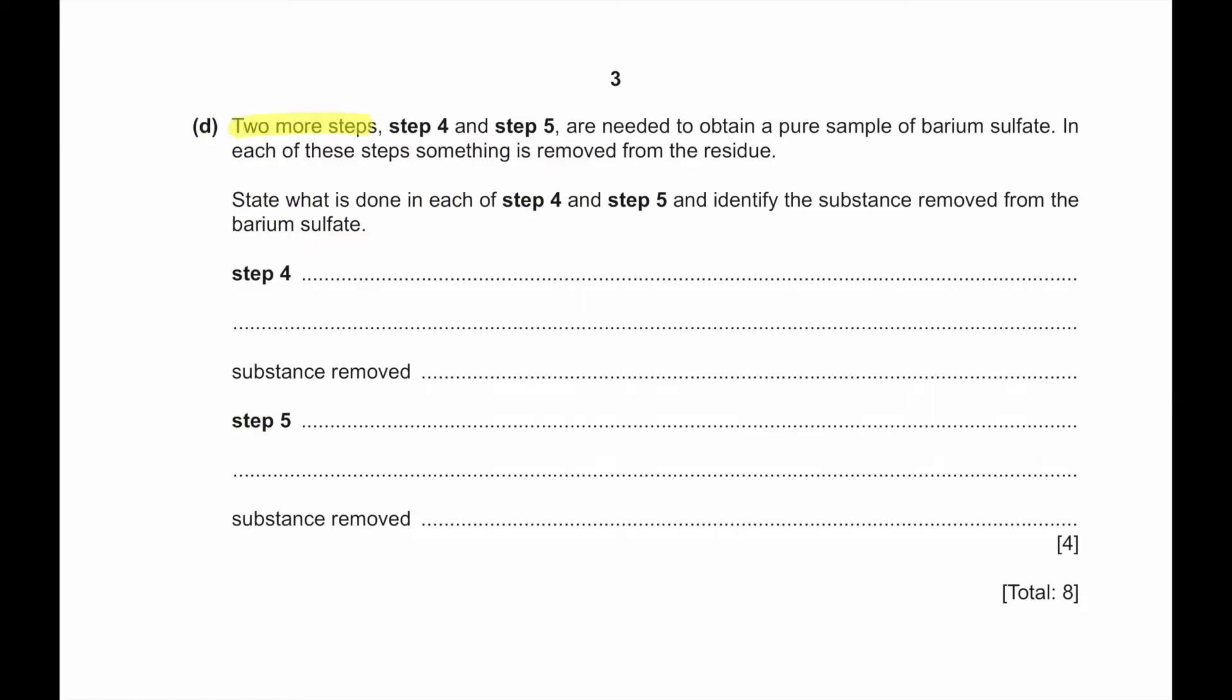Part D. Two more steps 4 and 5 are needed to obtain a pure sample of barium sulfate. In each of these steps something is removed from the residue. State what is done in each of the steps 4 and 5 and identify the substance removed. In step 4 we can wash the residue with water to remove any sodium sulfate impurities or sodium chloride impurities that was there. And then in step 5 we can dry it. The main objective is to remove the water.